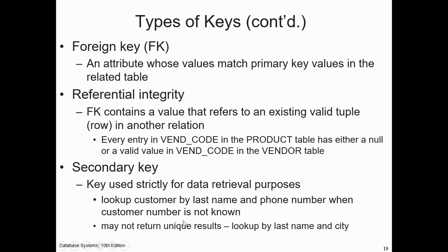A foreign key is an attribute whose values match primary key values in a related table. Referential integrity means the foreign key contains a value that refers to an existing, valid row in another relation. Every entry in vendor code in the product table must have either a null or a valid value in vendor code in the vendor table. A secondary key is a key used strictly for data retrieval purposes, such as looking up a customer by last name and phone number when the customer number is unknown.